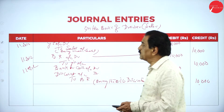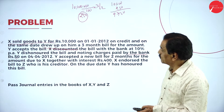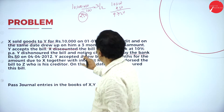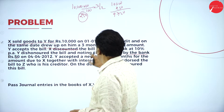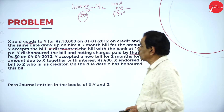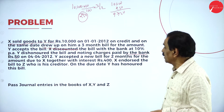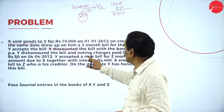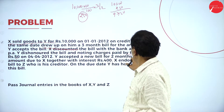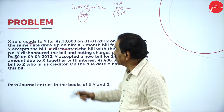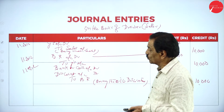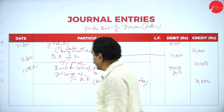How many months time? 3 months. What is the due date? 1-1, 3 months is 4-1, plus 3 days = 4-4-2012. On the due date, Y dishonors the bill and noting charges paid by the bank. On which day? 4-4-2012.